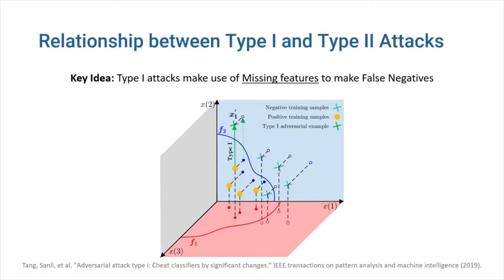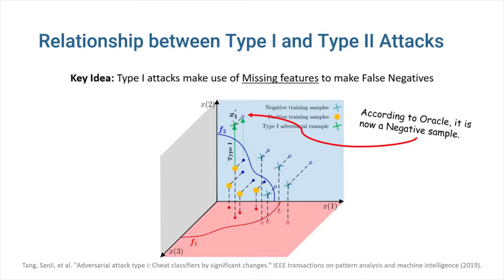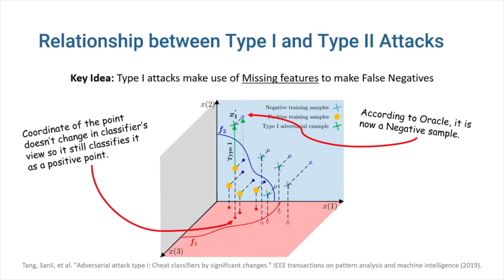Now, if we were going to perform a type 1 attack, we'd have to make use of the missing feature x2. We call x2 the missing feature because, despite the fact that it was one of the two essential features that the oracle used to classify the points, it was not included in the classifier's model. Just like the previous example, we advance a data point in the direction of the missing feature x2 until the oracle classifies it as a negative sample. However, as you can see, the point's coordinates on the x1 and x3 axes remain unchanged. Thus, our classifier continues to identify it as positive. By using a type 1 adversarial attack, we can effectively mislead a model into making a false positive error.